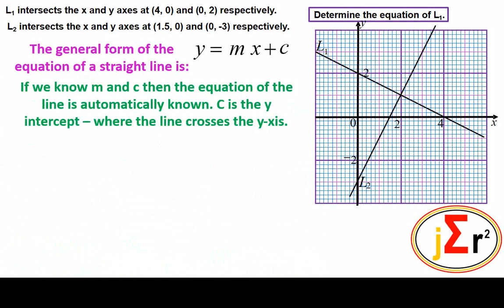If we know m and c, then the equation of a line is automatically known. C is the y-intercept, where it crosses the y-axis. y equals mx plus c.